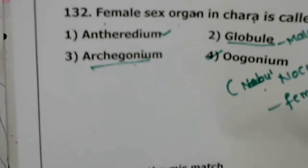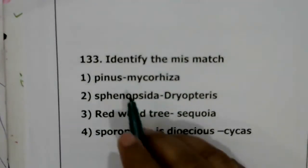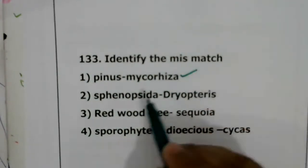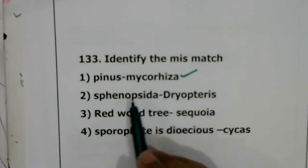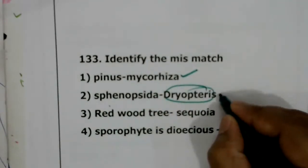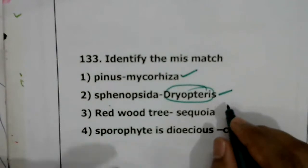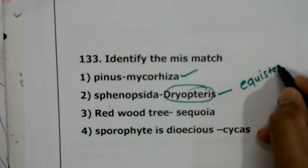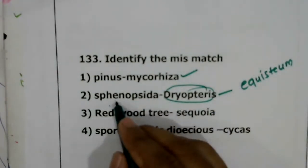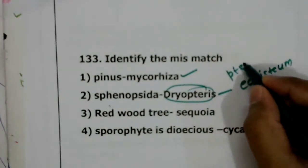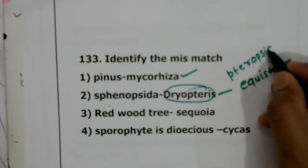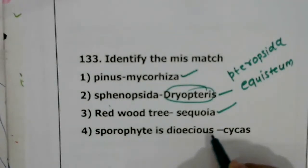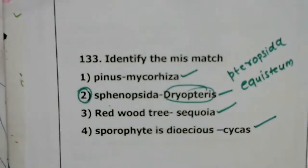Question 133: identify the mismatch. Pinus and mycorrhizae — correct. Sphenopsida and Dryopteris — wrong; Sphenopsida is a class of pteridophytes with example Equisetum, while Dryopteris belongs to Pteropsida. Redwood tree scientific name Sequoia — correct. Sporophyte is dioecious in Cycas — correct. The answer is the second option.